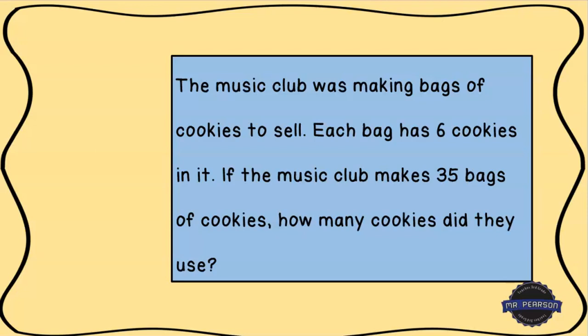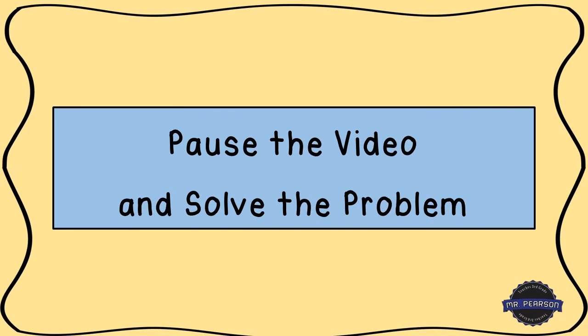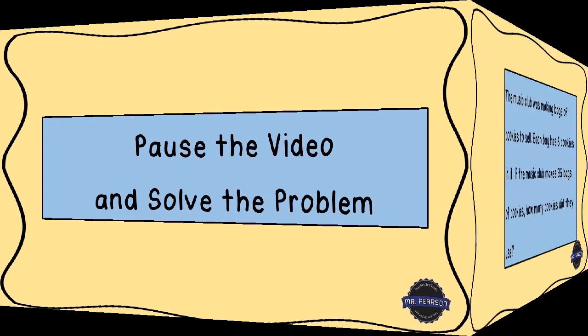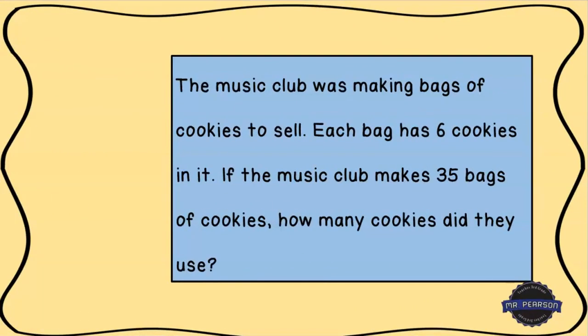Go ahead and write down your problem. You can write down the numbers that you see and figure out what type of problem it is. Pause the video, solve it, and then come back and we will walk through how I solve this problem. Hopefully you've had time to solve this. The music club was making bags of cookies to sell. Each bag has six cookies in it. If the music club makes 35 bags of cookies, how many cookies did they use?